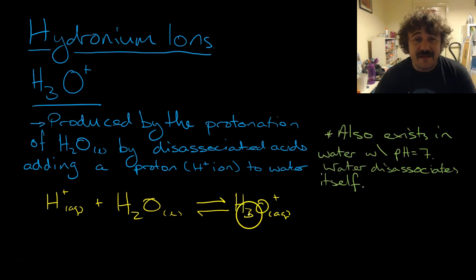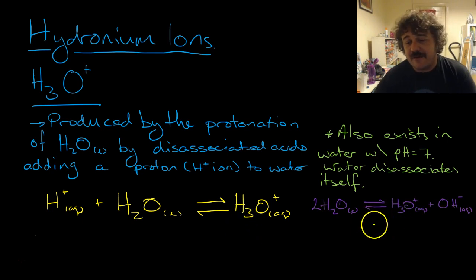Now, it does exist in water, which has a pH of 7, but it exists in the exact same quantities as hydroxide ions. And that's because water will disassociate with itself, like this. So you get hydronium ions, plus you get hydroxide ions, and those concentrations are exactly the same.